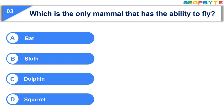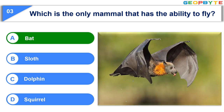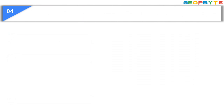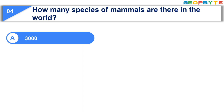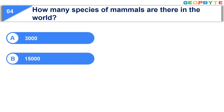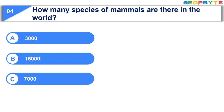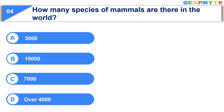Your time is up and the correct answer is Option A: Bat. The fourth question is: How many species of mammals are there in the world? Option A: 3,000. Option B: 15,000. Option C: 7,000. Option D: Over 4,000. Your time starts now!